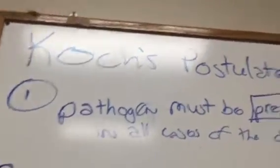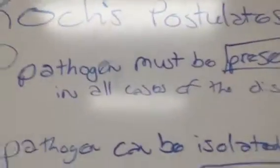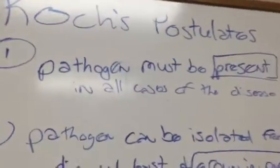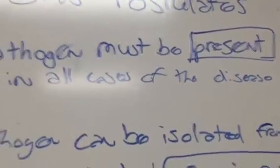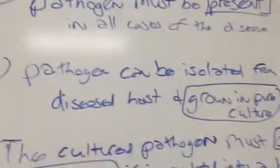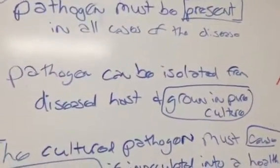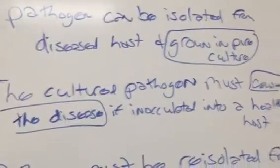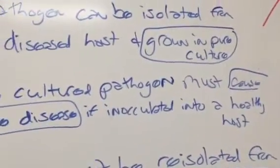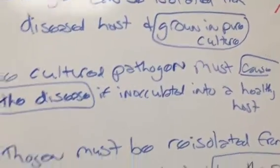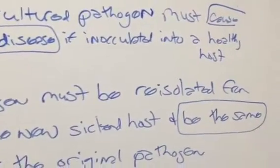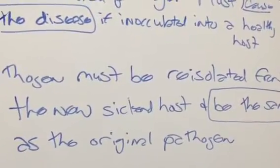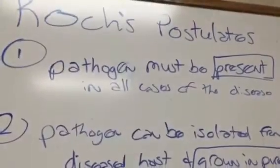First, just to quickly review what the postulates are: when we're trying to identify a causative agent in an infectious disease, the pathogen must be present in all cases of the disease; the pathogen can be isolated from the diseased host and grown in pure culture; the cultured pathogen must cause disease if inoculated into a healthy host; and then the pathogen must be re-isolated from the new host and be identical to the original pathogen.